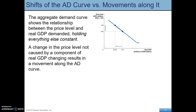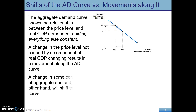As before, we have a distinction between movement along the curve versus shifts of the curve, and the curve here is aggregate demand. If there's a change in the price level caused by anything other than a shifter — something that affects the price level that isn't a shifter — that's going to result in a movement along the curve, just like a change in price before was a movement along the curve.